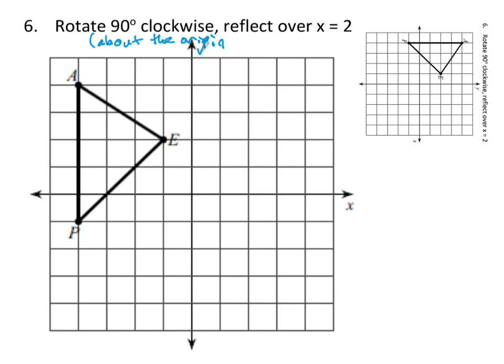And so I can rotate my shape. If I pretend this is y and this is x, my p is just at negative 1, 4. My e is at 1, 2. And so I could turn my paper back so it looks like this again. And I can go to negative 1, 4. There's where p is gonna be. And I can go to 2, 1. There's e.